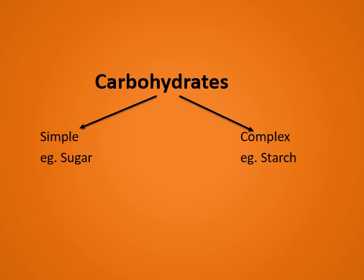Carbohydrates are of two types: simple and complex. Simple carbohydrates are digested quickly and thus provide instant energy to our body — an example is sugar. Complex carbohydrates take a longer time to be digested — an example is starch.